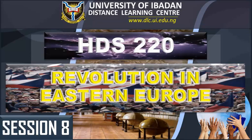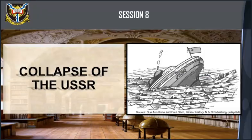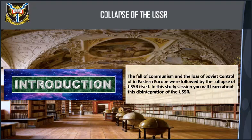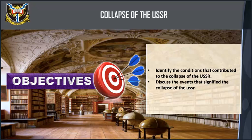Welcome to study session 8: Collapse of the USSR. Introduction — the fall of communism and the loss of Soviet control of Eastern Europe were followed by the collapse of the USSR itself. In this study session we will learn about this disintegration of the USSR. Objectives: identify the conditions that contributed to the collapse of the USSR, and discuss the events that signified the collapse of the USSR.